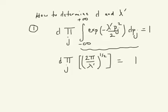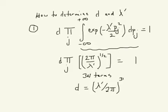And we can solve; j goes from 1 to 3n, so there's 3n terms, like this, so you can easily show, therefore, that D must be equal to lambda prime over 2π, the entire quantity raised to the 3n over 2 power.